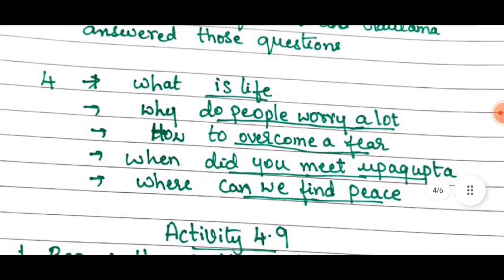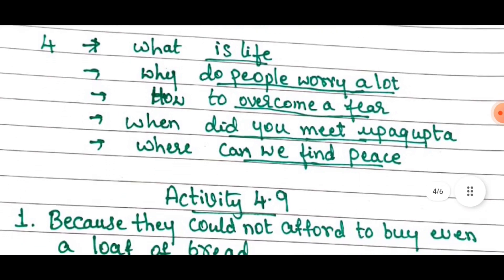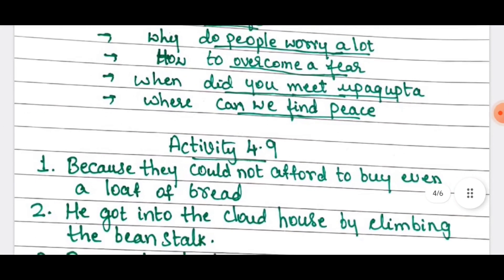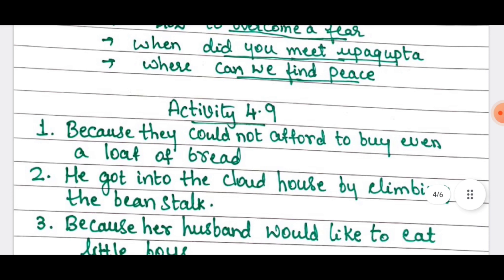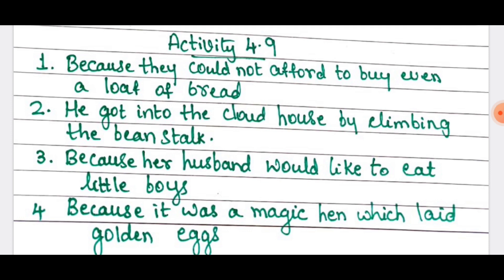The next one is activity 4.9 — Jack and the Beanstalk, the drama. Scene 1 and 2 — read it. Based on that, the answers are: first, because they could not afford to buy even a loaf of bread; second, he got into the cloud house by climbing the beanstalk; third, because her husband would like to eat little boys; fourth, because it was a magic hen which laid golden eggs.